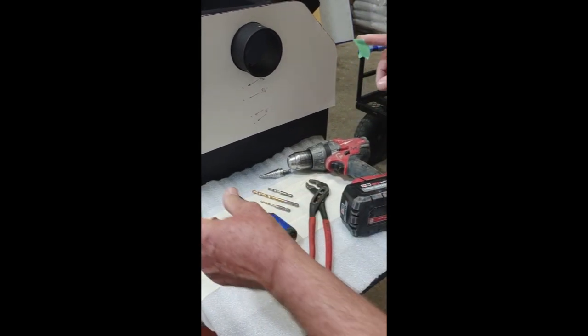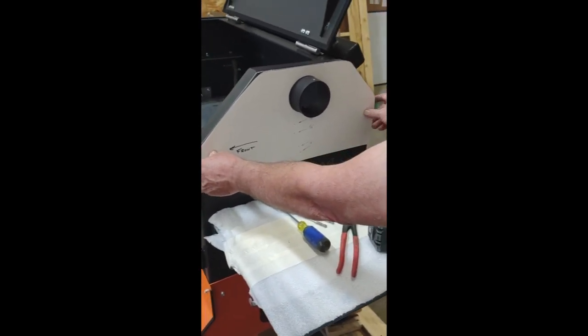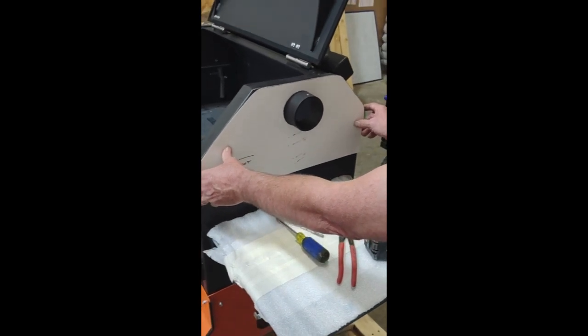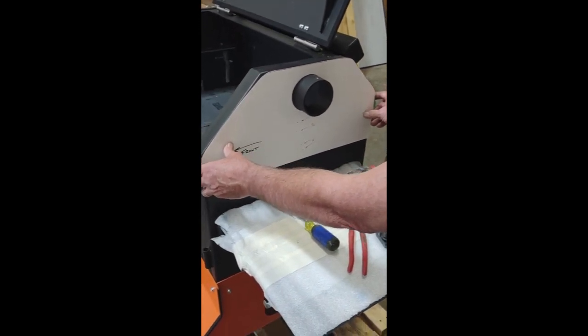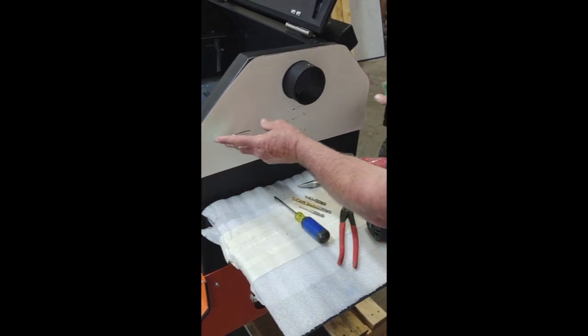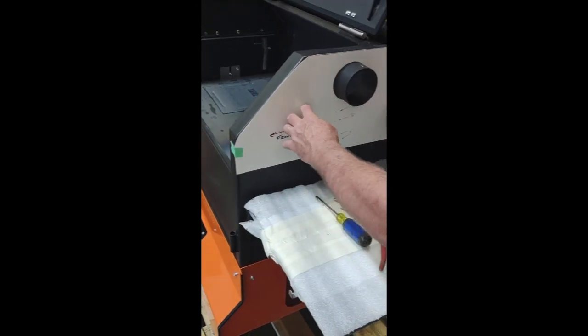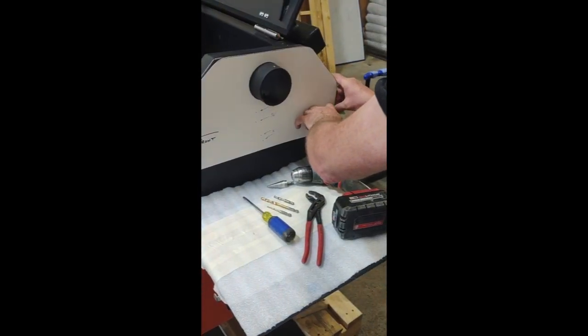And what you're going to do is you're going to take your template that comes with it. Put it on your side there. You just take a piece of tape. Just tape it so it doesn't move when you're making your holes.